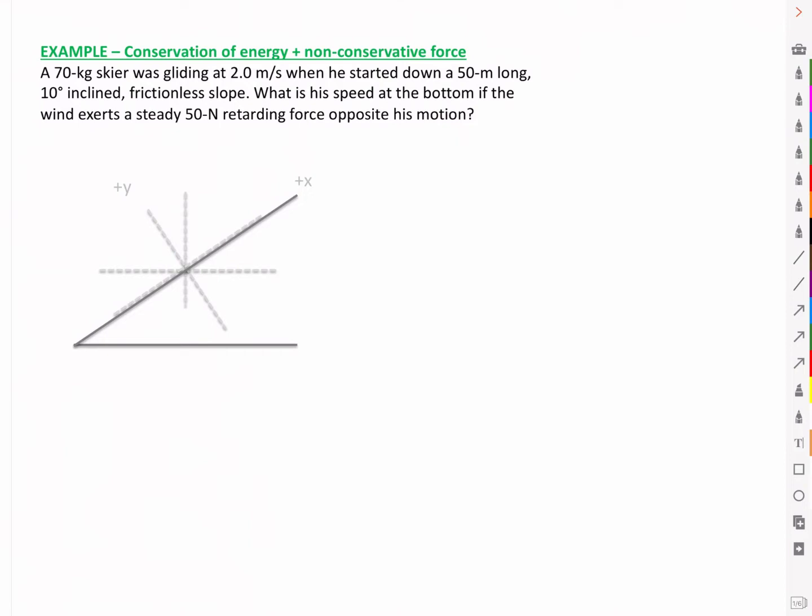So we have an initial velocity here of 2 m per second and we are going down a 50 m long incline. We are told that it is frictionless so we do not have the force of friction or any work due to friction, but we do have a retarding force or non-conservative force due to wind. And so we have this force due to the wind acting against us and it asks for what is the speed at the bottom. So we want the final speed at the bottom of that incline that we are trying to find.